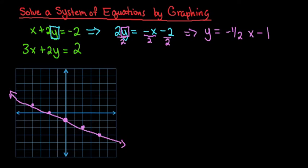So now we have to do the same thing for the second equation. So we want to solve for y on the second equation. So to do that, I would first move the 3x to the other side. So we would have 2y equals negative 3x plus 2.